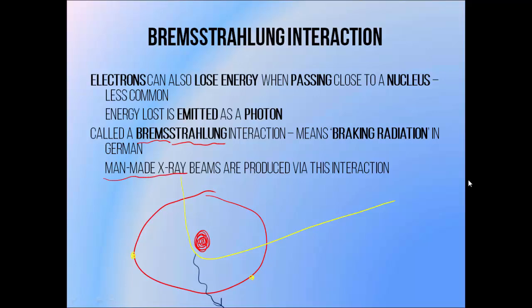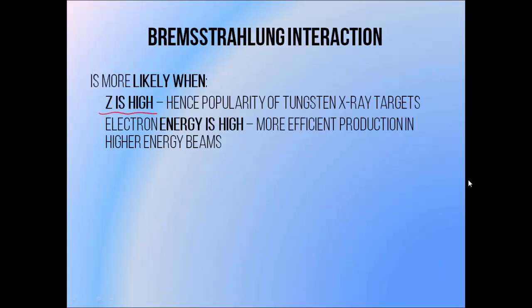It is via this process that X-ray tubes and linear accelerators are able to produce X-ray beams. We do this by slamming a high energy electron beam into a target material like tungsten. As it passes through the target, it undergoes the Bremsstrahlung interaction and produces photons. We use a high atomic number material like tungsten because the Bremsstrahlung interaction is much more likely when the atomic number is high, because the nuclear charge is greater, and therefore electrons passing through the material are more likely to interact with it.